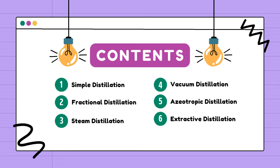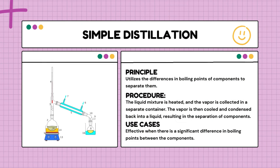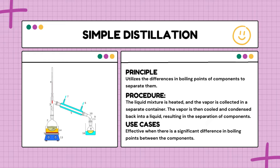Let's get started with simple distillation. Simple distillation is a method of separating the components in a liquid mixture based on the differences in their boiling points. The mixture is heated and the component with the lowest boiling point vaporizes first. The vapor is then condensed back into a liquid in a separate container, resulting in the isolation of the individual components. This process is effective when there are significant differences in boiling points among the components.